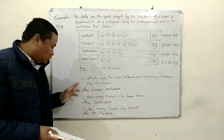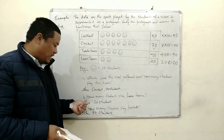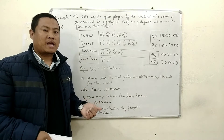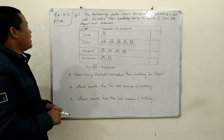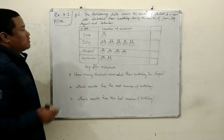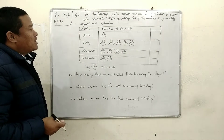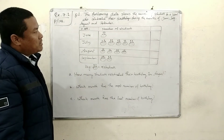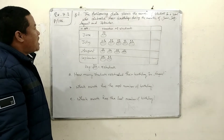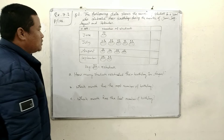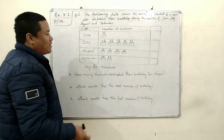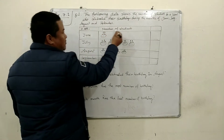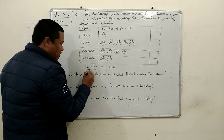So children, 2 more questions — D and E — are left, which you have to practice at home. Page number 158, Exercise 7.1, question number 1: the following data shows the number of students in a school who celebrated their birthday during the months of June, July, August, and September. We have a pictograph table here with months and number of students.